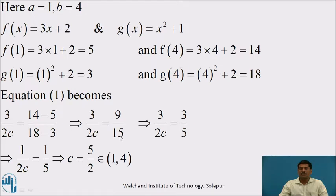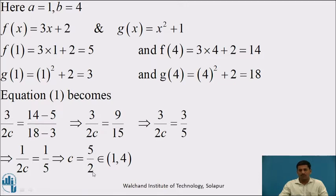Now 9 and 15 are both divisible by 3, so dividing gives 3 / (2c) = 3 / 5. Since both numerators are 3, we get 1 / (2c) = 1 / 5, which implies c = 5/2 = 2.5. Since 2.5 lies between 1 and 4, this is the required point c for which Cauchy's mean value theorem holds.